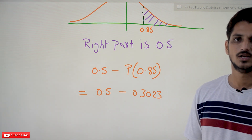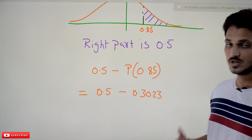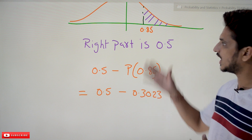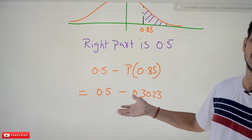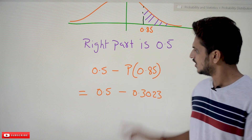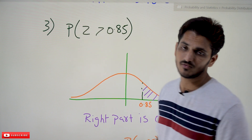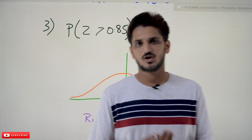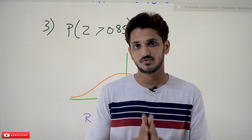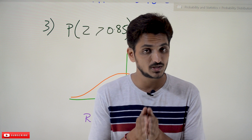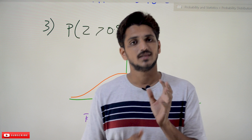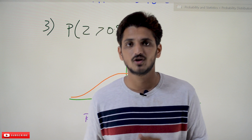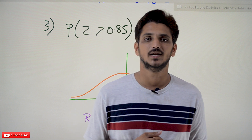This is how, with some understanding of probability and normal distribution, we can use the standard normal table to identify probability values. Hope you understand how to find probability values given the z-table. If you have any questions please post them in the comment section below. Thanks for watching — if you haven't subscribed to our channel, please subscribe and press the bell icon for the latest updates.